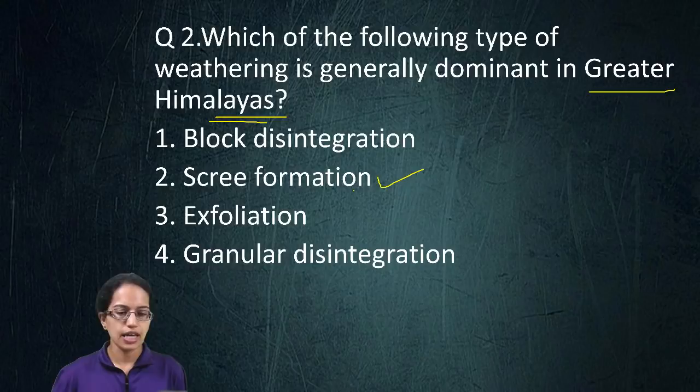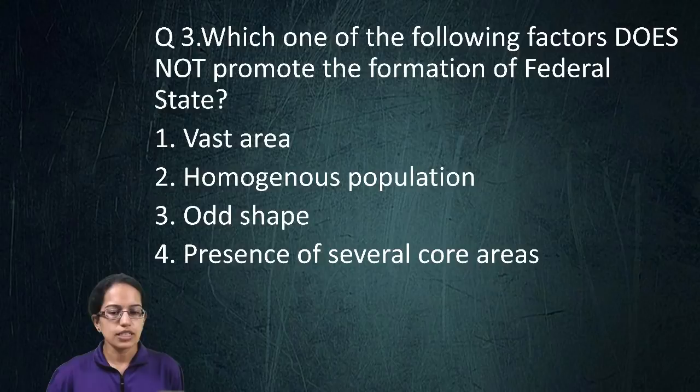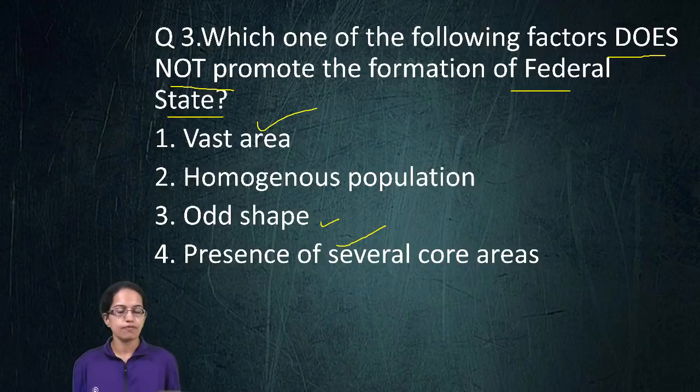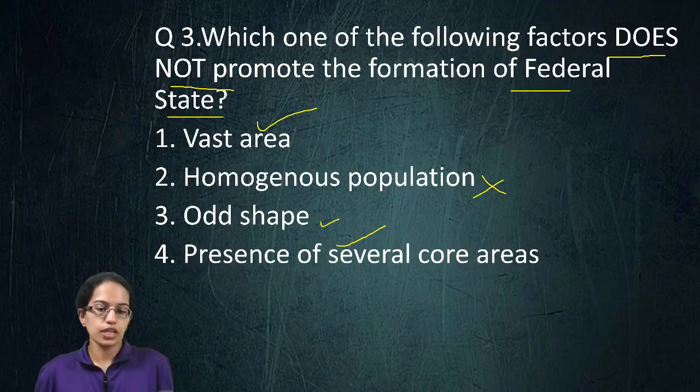This question asks which of the factors does not promote a federal state. A vast area with many core areas and different groups would be factors promoting a federal state. But if there is a homogeneous population, there is no need for a federal state. So B, the second choice, is the incorrect option here.